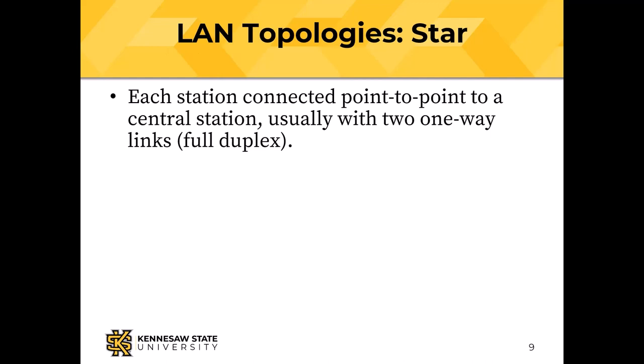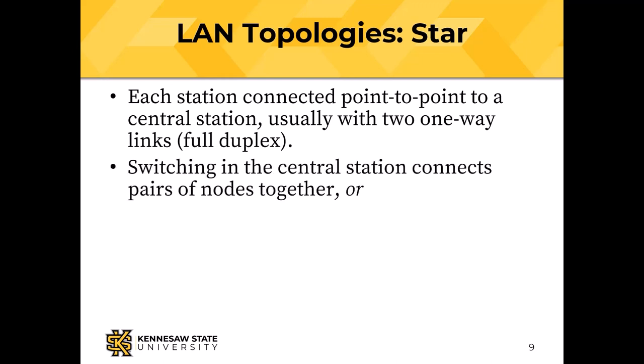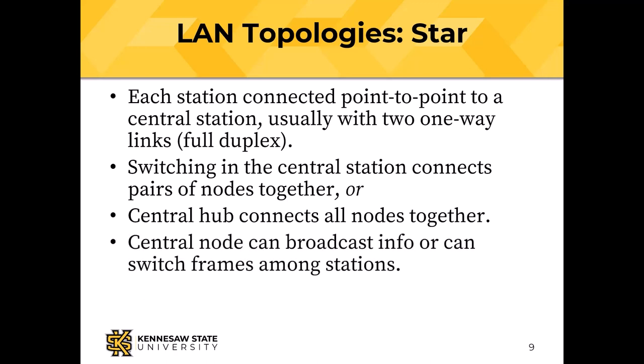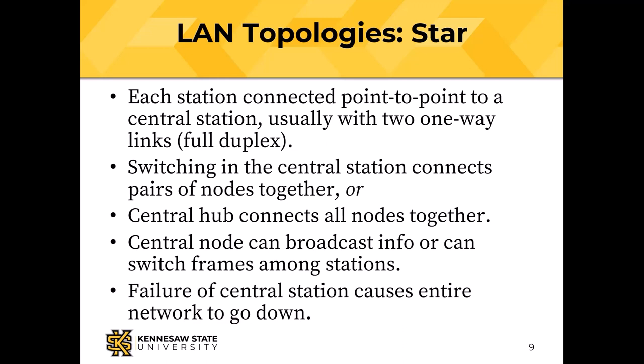In a star topology, each station is connected to a central facility — think of a switch in the middle with spokes coming out. The switch connects pairs of nodes. Hubs, which connected everyone to everyone, are now obsolescent. The central node can broadcast to all stations, but if it goes down, the whole network goes down.